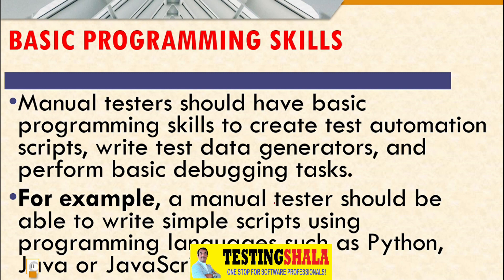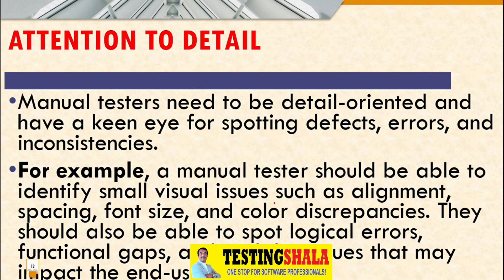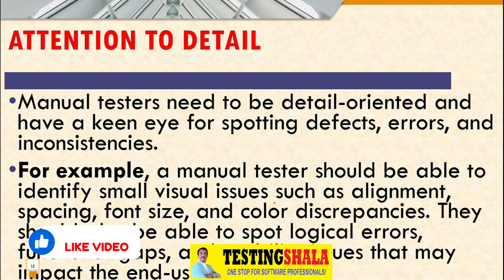Attention to detail is a very key skill for any manual tester. A manual tester needs to be a detail-oriented person, with keen eyes for spotting defects, errors, or inconsistencies in the application — whether from visual issues, logical errors, usability experiences, or functional gaps. The tester should be able to understand where the issues are coming from.